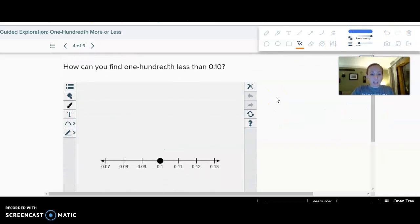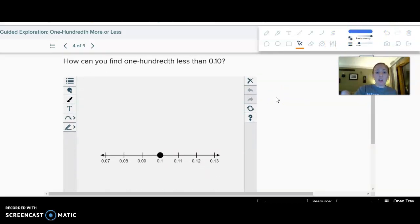So then, how can I go one-hundredth less than ten-hundredths? Well, if I have ten-hundredths, one-hundredth less than that is just going that way on the number line to nine-hundredths. Suddenly, though, if you just look at this, it might be hard to see. But if I add that zero, oh, one less than ten is nine.